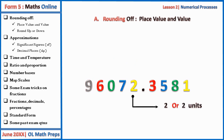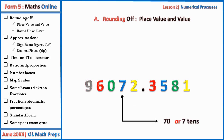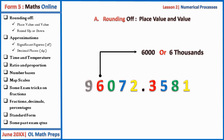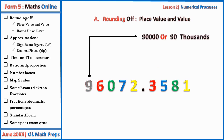Before the decimal point: two occupies the position of two units, or just two. Seven is seventy. Zero is zero hundreds. Six has the value of six thousand, and nine has the value of ninety thousand.